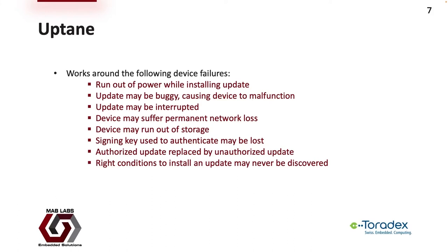Uptain can also handle: loss of network connectivity, running out of storage, loss of the key used to sign an image, replacement of an authorized update with an unauthorized one, and scenarios where the device is never given the opportunity to perform an update because appropriate conditions have not manifested. These are just some of the failure modes Uptain can guard against, demonstrating how extensive it is.